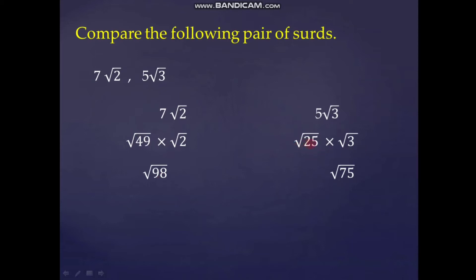Multiplying the radicands: the first SIRD becomes root of 49 times 2, which is root 98, and the second becomes root of 25 times 3, which is root 75. Both SIRDs are now in pure form with equal orders. Comparing the radicands, 98 is greater than 75, so root 98 is greater than root 75. Therefore, 7 root 2 is greater than 5 root 3.